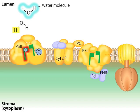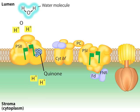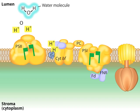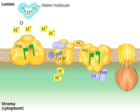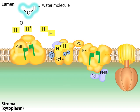After two photons have been absorbed, two electrons have been stripped from water. A quinone carries the two electrons within the membrane to the next component in the electron transport chain. The quinone also picks up two hydrogen ions and delivers them to the other side of the membrane. As electrons pass through the cytochrome BF complex, the complex pumps hydrogen ions across the membrane.